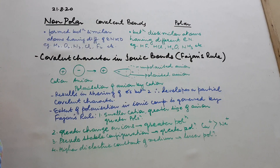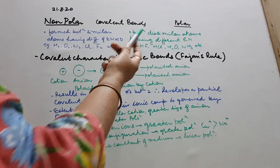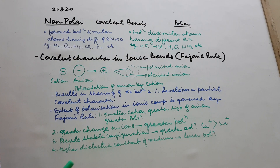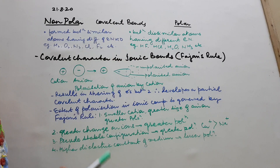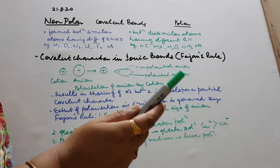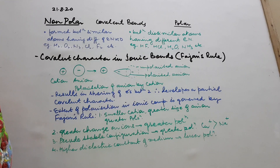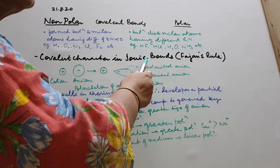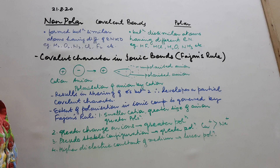Now, polar covalent bonds or compounds having polar covalent bonds. These are formed between dissimilar atoms — not like atoms — having different electronegativities, having a good difference of electronegativities. Example: HF. Fluorine is a very highly electronegative atom and compared to F, the electronegativity of H is quite low, so there is a good difference in electronegativity — this bond is a polar covalent bond. HCl, water, and ammonia are also examples of polar covalent bonds. So bonds between dissimilar atoms having a good difference of electronegativities are polar covalent bonds.